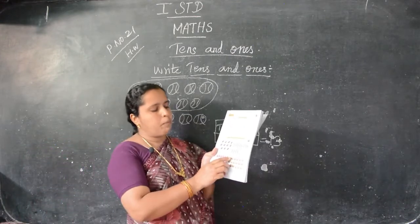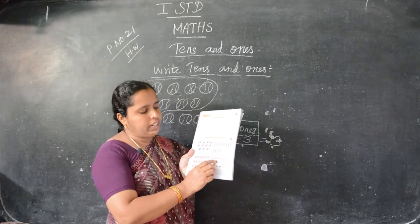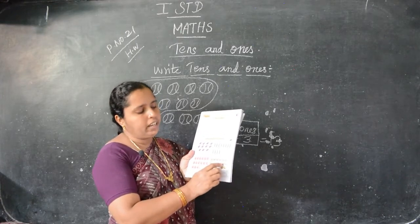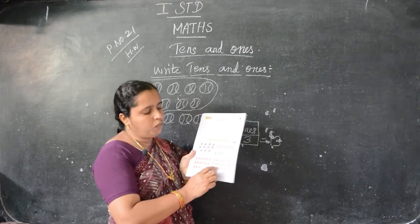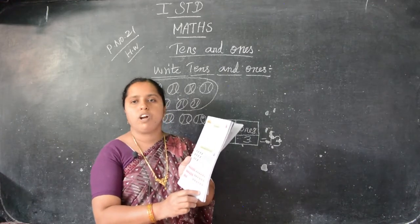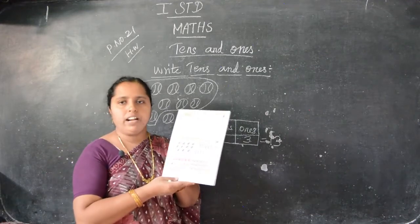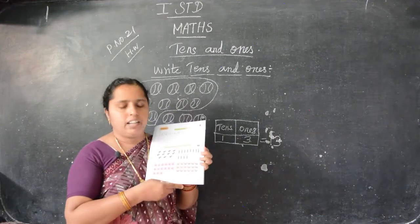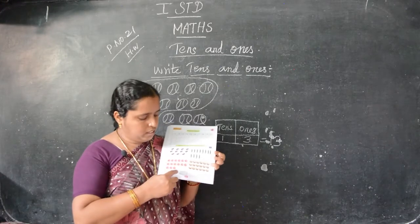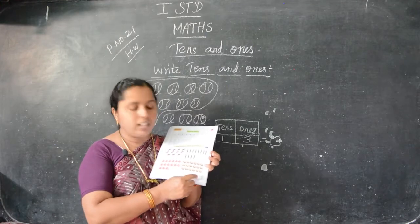Here see potato — how many potatoes are there? 1, 2, 3, 4, 5, 6, 7, 8, 9, 10. First you group the 10 potatoes and remaining: 1, 2, 3, 4, 5, 6, 7, 8. So in the 1s place you write 8 and in the 10s place 1. Understand children — this is 12: 1, 2. This is 15: 1, 5. This is 18: 1, 8.